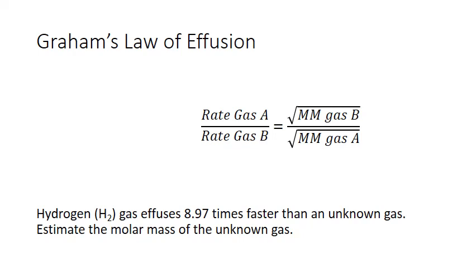So to answer this question, let's first define what we know. We're not given the absolute rates of effusion of the gases, but we do know the relationship between them. So if we define the rate of the unknown gas as x, then the rate of hydrogen gas would always be 8.97 times x.